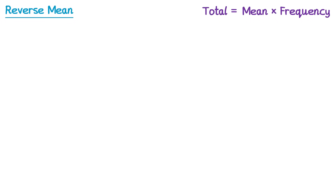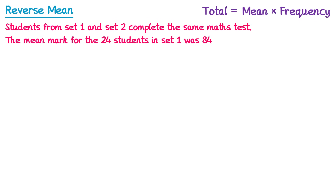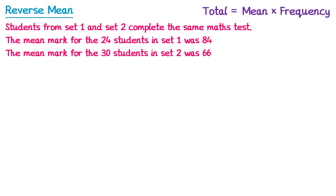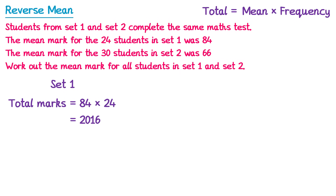Let's try another example with a similar style. Students from set 1 and set 2 complete the same maths test. The mean mark for the 24 students in set 1 was 84, and the mean mark for the 30 students in set 2 was 66. We need to work out the mean mark for all students combined. Starting with set 1, to work out the total marks we multiply the mean, 84, by the frequency, 24 students — this gives 2016 marks.